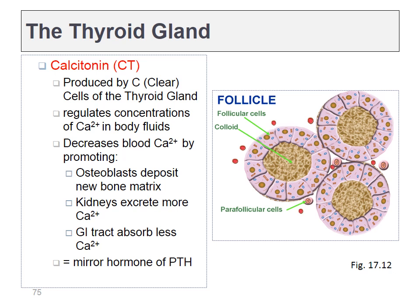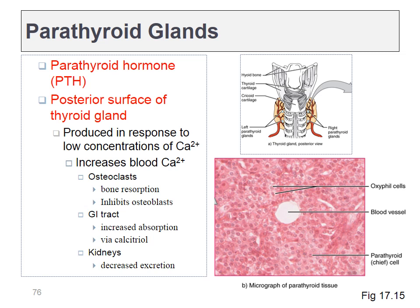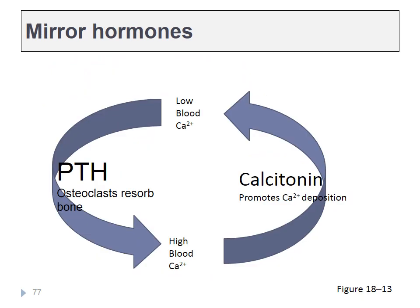The thyroid gland also produces calcitonin, from the parafollicular cells found between the follicles. This is the mirror hormone for PTH. PTH comes from the parathyroid gland. PTH and calcitonin are mirror hormones — we should only see one in the bloodstream at any given time. PTH is produced when blood calcium is too low, and it activates osteoclasts, decreases kidney excretion, and increases gut absorption. Calcitonin does the exact opposite.